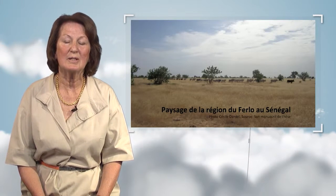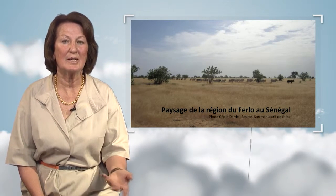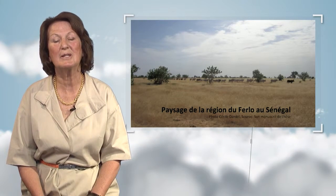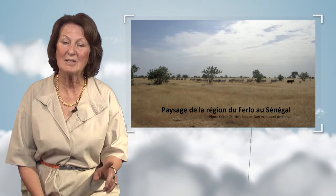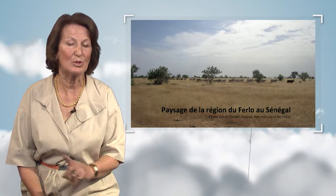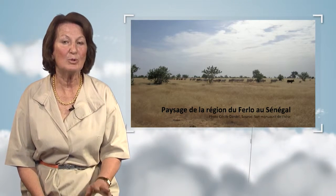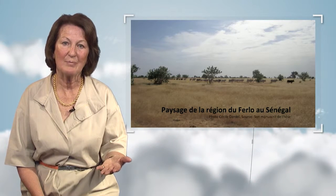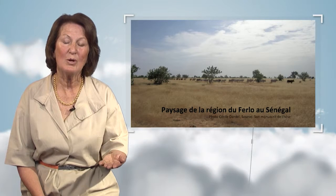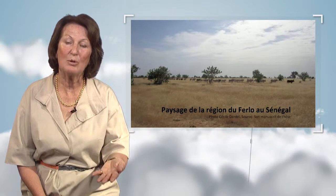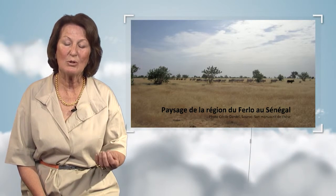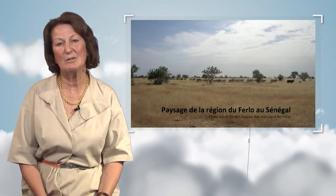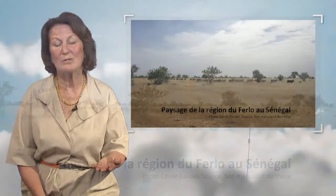Two brilliant researchers, Jules Charney and Joe Turman, came up with a number of theories to explain this phenomenon, which actually happened not only in Sahel but in other semi-arid areas. The problem was that land use had changed. In Sahel, the land had been overgrazed, and because it had been overgrazed, herbaceous coverage had disappeared.